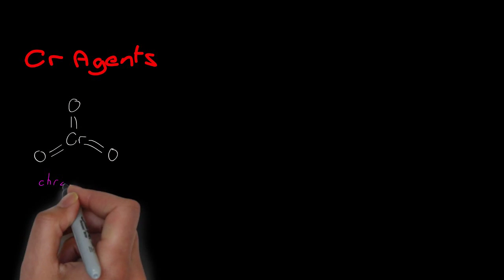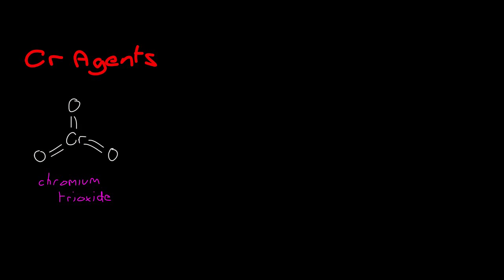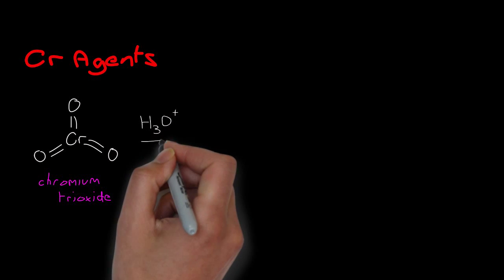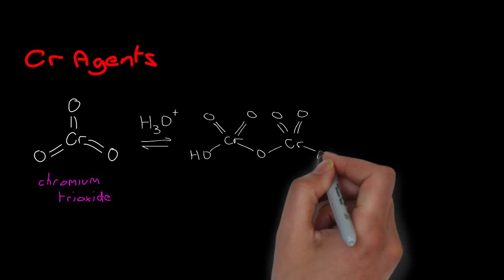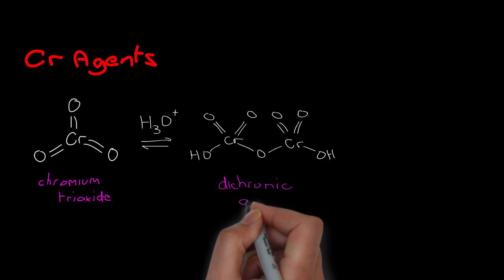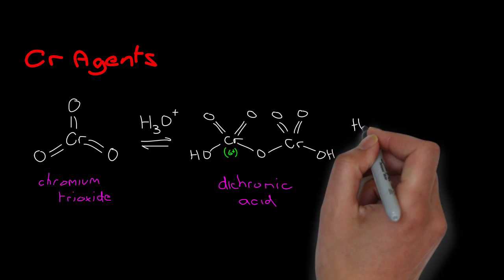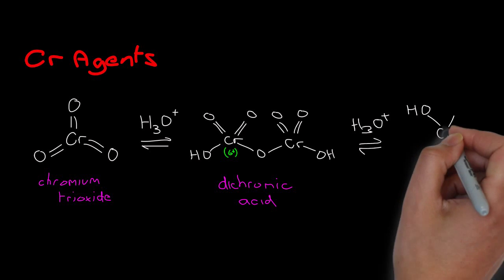Appreciation of chromium-based oxidation reagents starts with a little bit of inorganic chemistry. If we take the rather insoluble chromium trioxide and dissolve it in mild acid, we get dichromic acid, and in strong acid, that reverts to chromic acid.